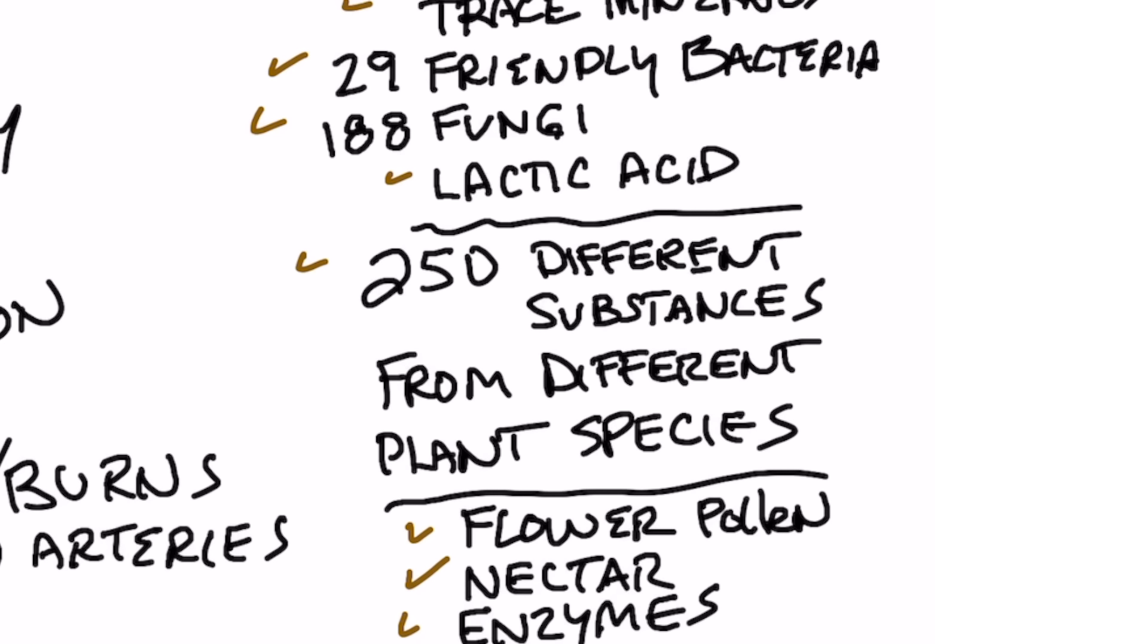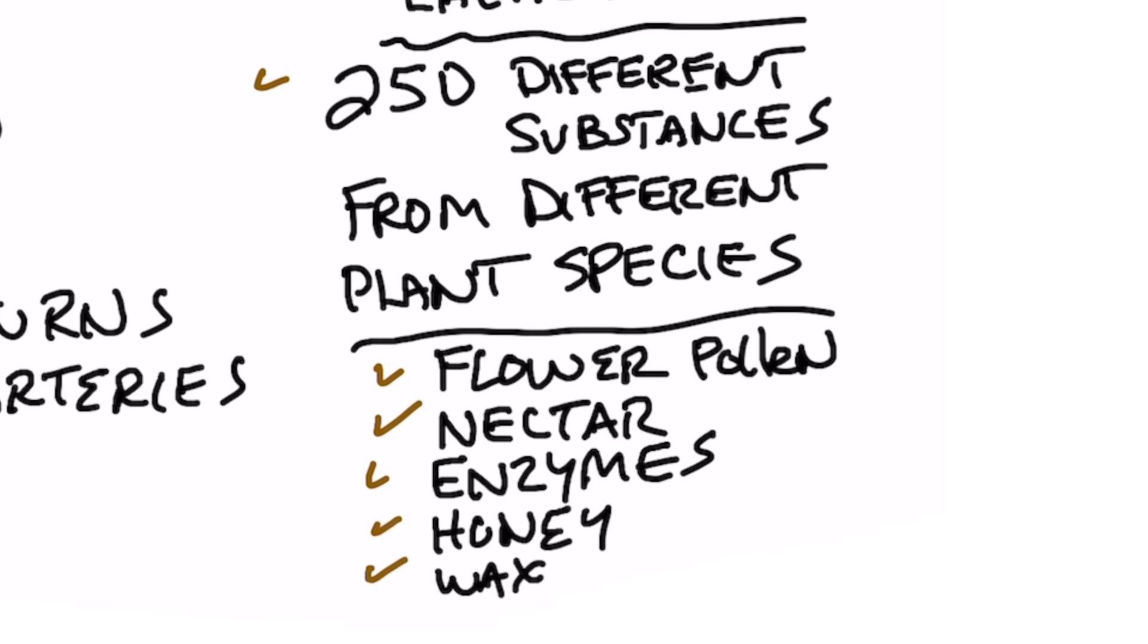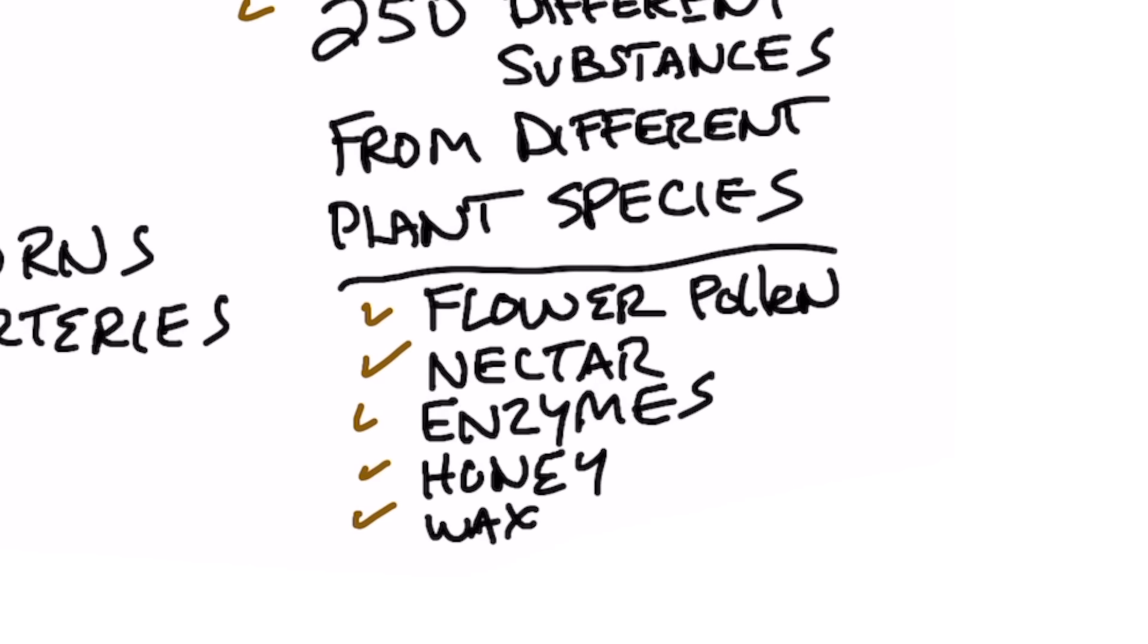There's over 250 different substances in bee pollen from many different species of plants. You also have flower pollen, nectar, enzymes, honey, which I mentioned, and wax.